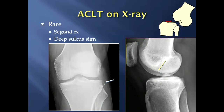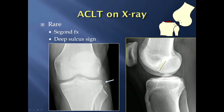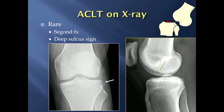There are a couple of signs on x-ray, though not very common. One is called a Segond fracture, where when the tibia subluxes, the lateral capsular ligament pulls off a small piece of bone off the lateral tibia. Another is the deep sulcus sign — an impaction fracture of the subchondral bone plate that can occur after an ACL tear.